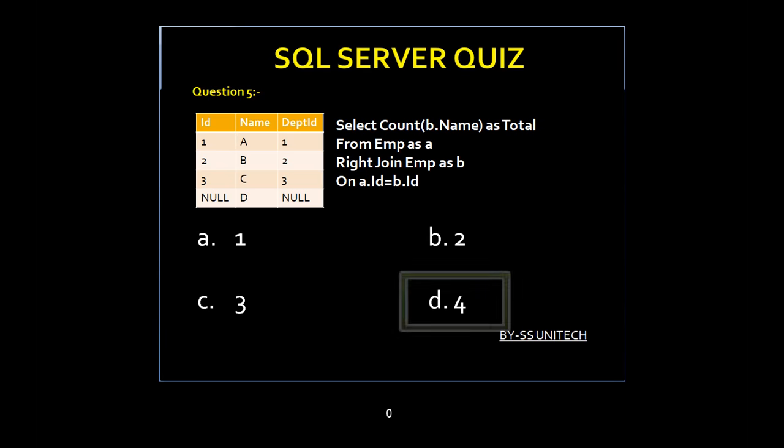Time up. Option D is true. Here we are using a RIGHT JOIN, so it will pick all the data from the right table and the count would be 4. So option D is true. Let's move to another question.